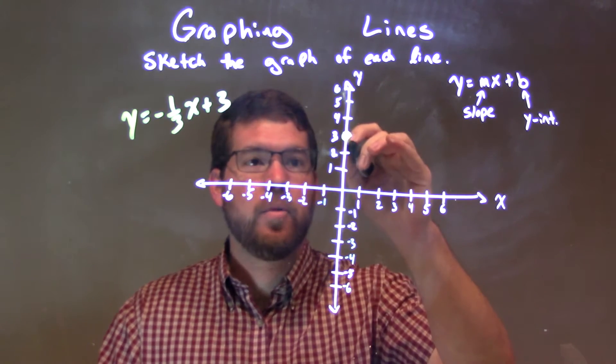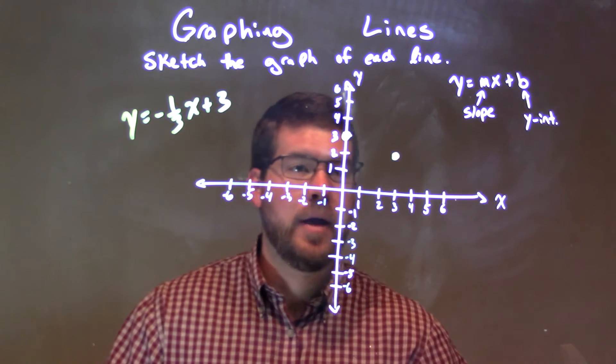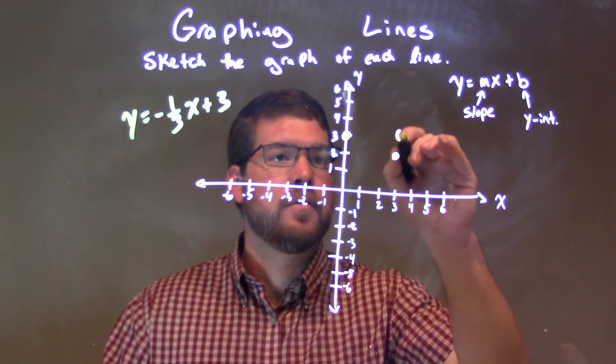So that means we're going down one unit over three, one, two, three units. And we have a point, right? And that point is three, two.